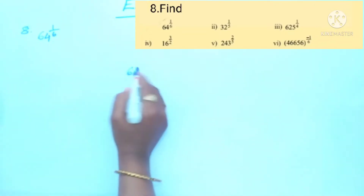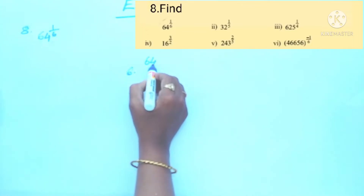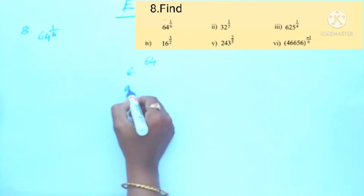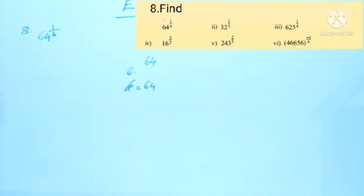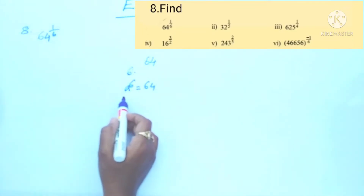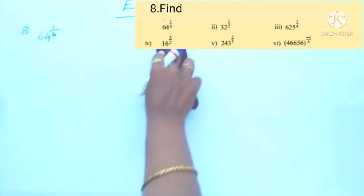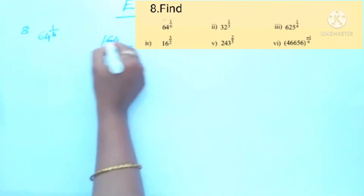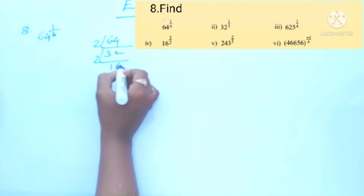Since the denominator in the power is 6, we have to check whether we can write 64 as something to the power of 6. So we will check with 2: 2 power 5 is 32, and 32 times 2 is 64.